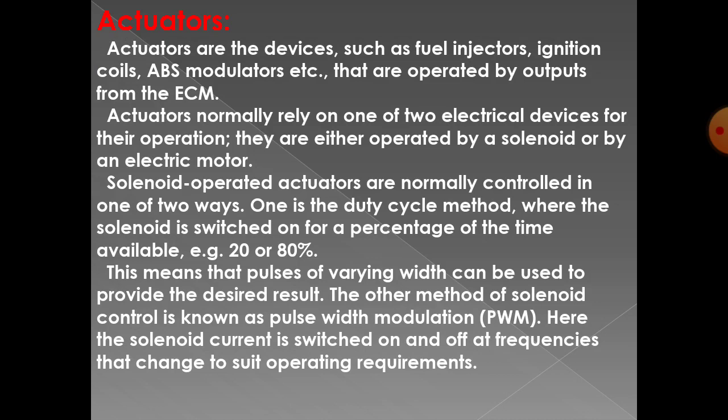These actuators are operated by output from the ECM. Sensors receive information from the parts and send it to the ECM, and then the ECM sends information to the operator system. The operator systems include fuel injectors, ignition coils, and ABS modulators. So actuators are nothing but the output operators of the ECM.